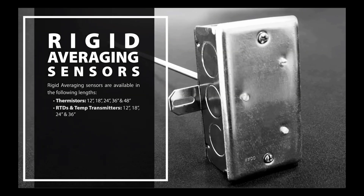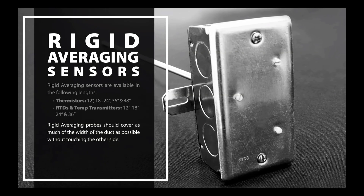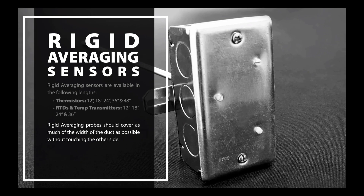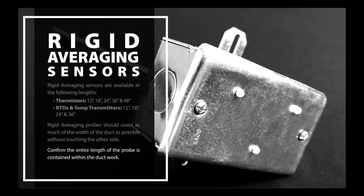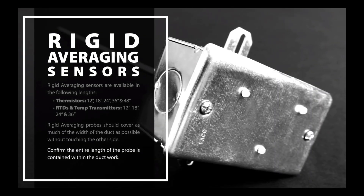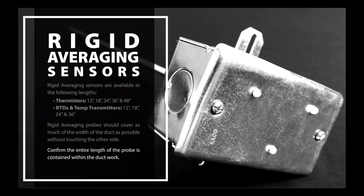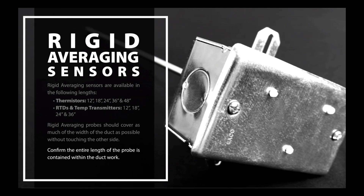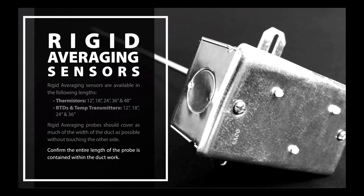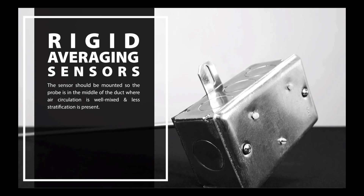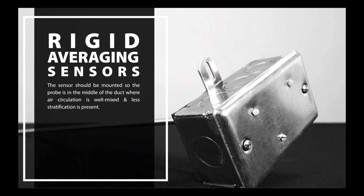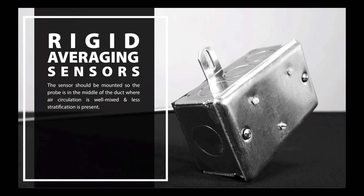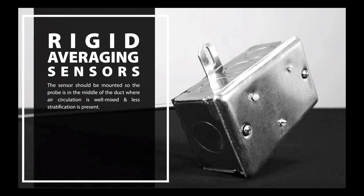You will want the rigid averaging probe to cover as much of the width of the duct as possible without touching the other side. Confirm that the entire length of the probe is contained within the ductwork when installed — if any portion of the probe is outside the duct, your output may be skewed. The sensor should be mounted so the probe is in the middle of the duct where air circulation is well mixed and less stratification is present.